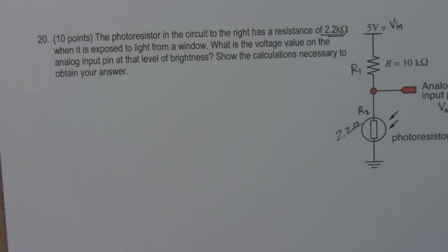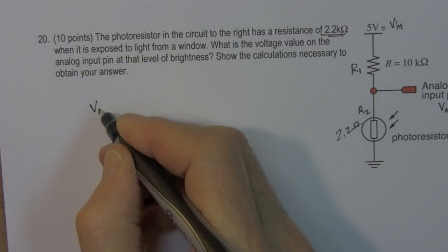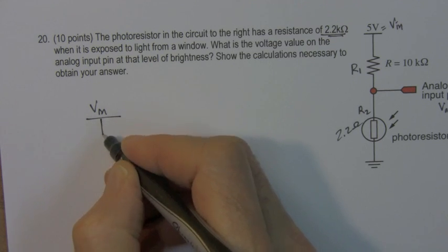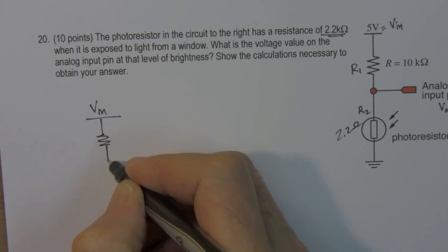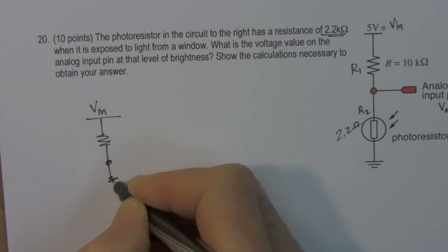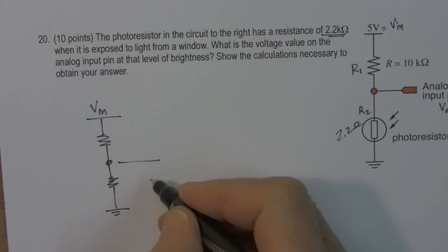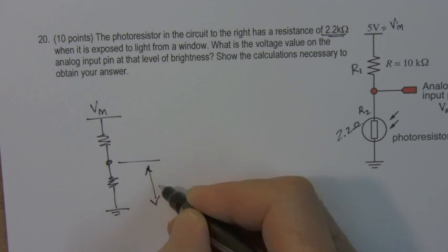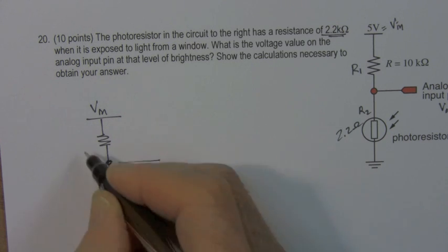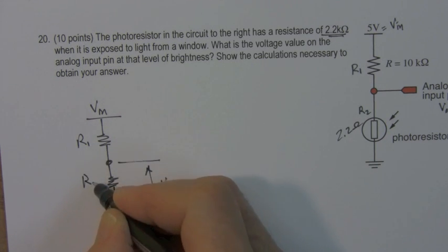So I'll redraw this voltage divider. VIN is what's supplied. We have two resistances, two resistors, and VOUT is measured here. R1 and R2 are here.